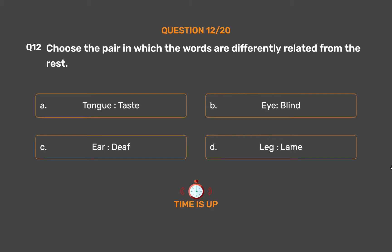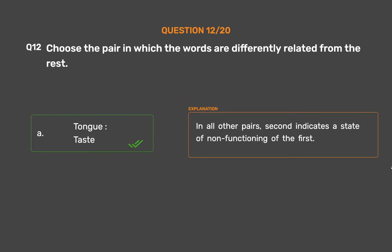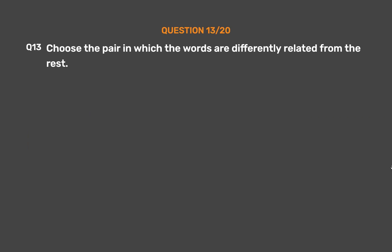The correct answer is Option A: Tongue, Taste. In all other pairs, the second indicates a state of non-functioning of the first.